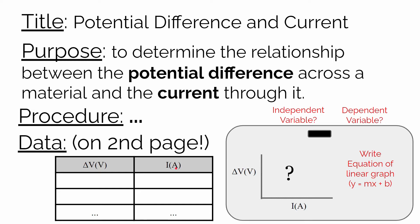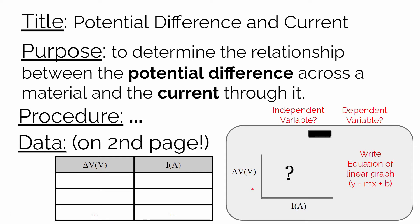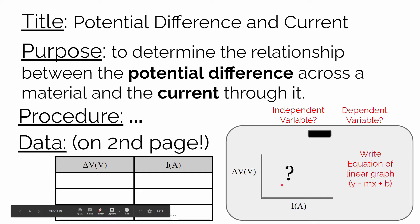Once you collect your data, you're going to graph the current going through your circuit element on the x-axis and the potential difference across that circuit element on the y-axis, then analyze that data graphically and algebraically, coming up with an equation for whatever linear relationship you have. If the original graph is not linear, you'll need to re-express and linearize it so you can get an equation for how potential difference and current are related for each of your circuit elements.